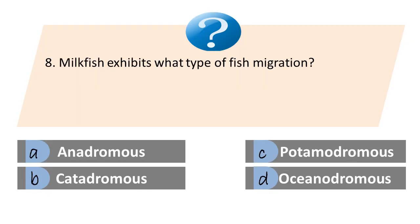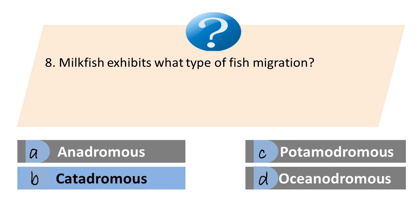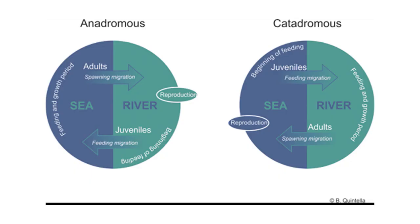Question: Milkfish exhibits what type of fish migration? A. Anadromous. B. Catadromous. C. Potamodromous. D. Oceanodromous. The answer is B. Catadromous. Anadromous fish go up the river to spawn, while catadromous fish go down to the sea to spawn.